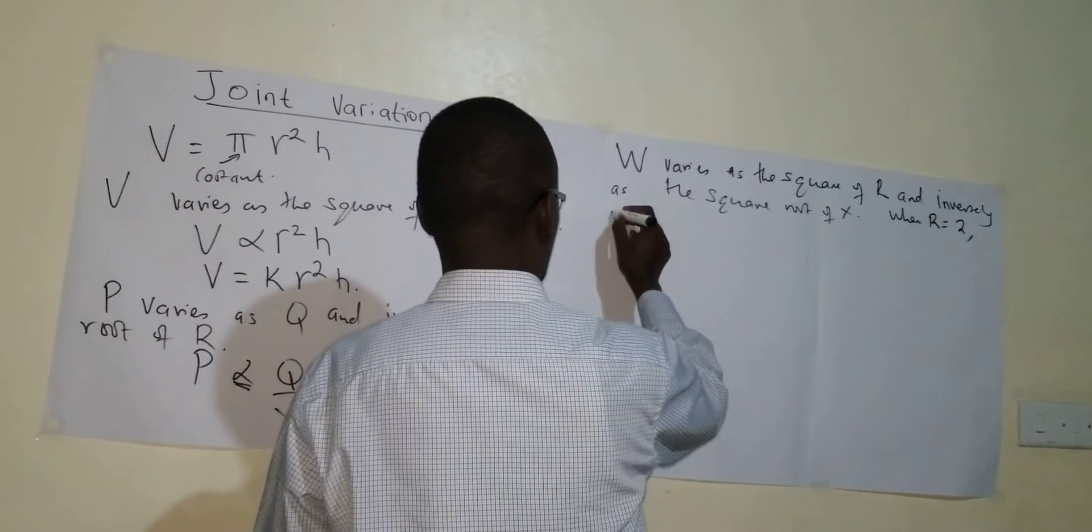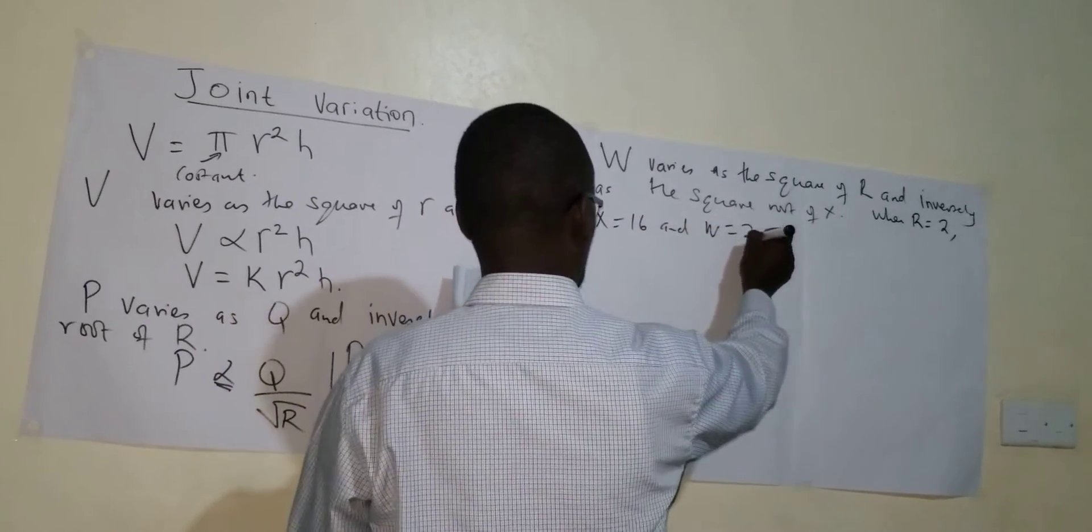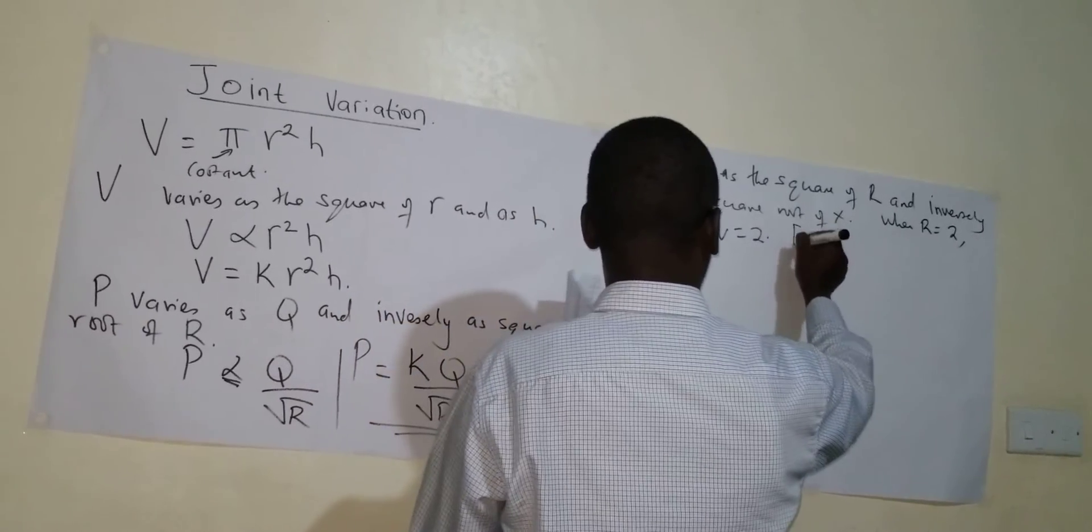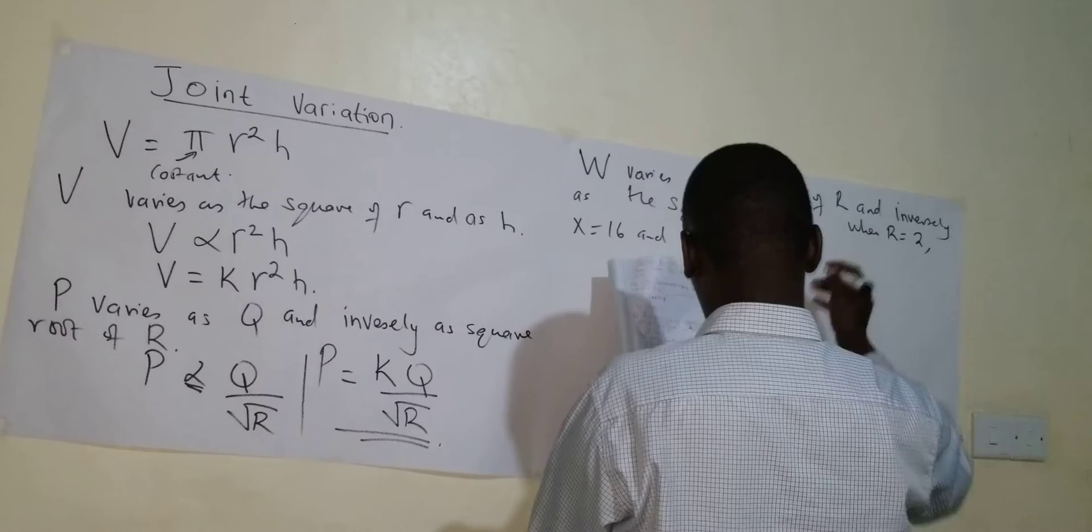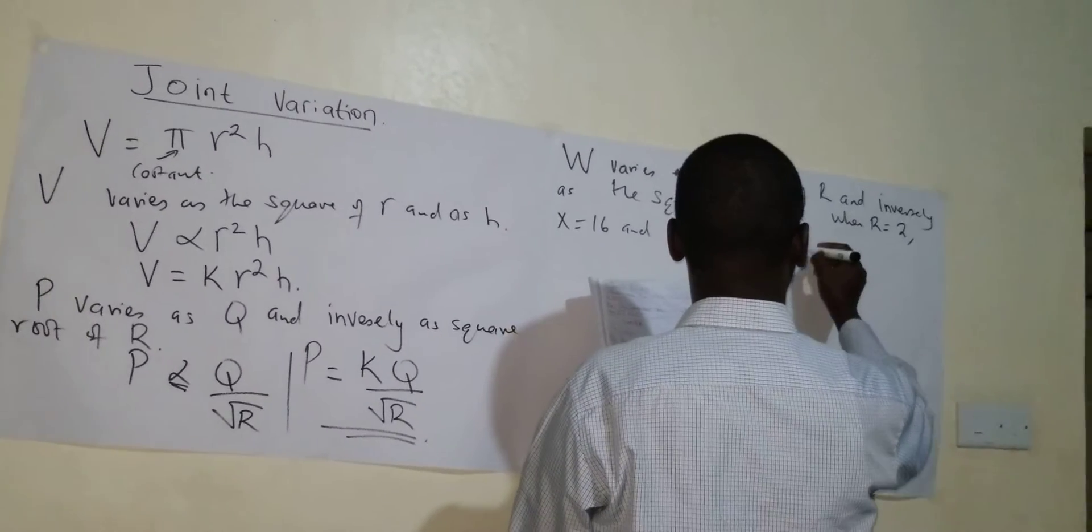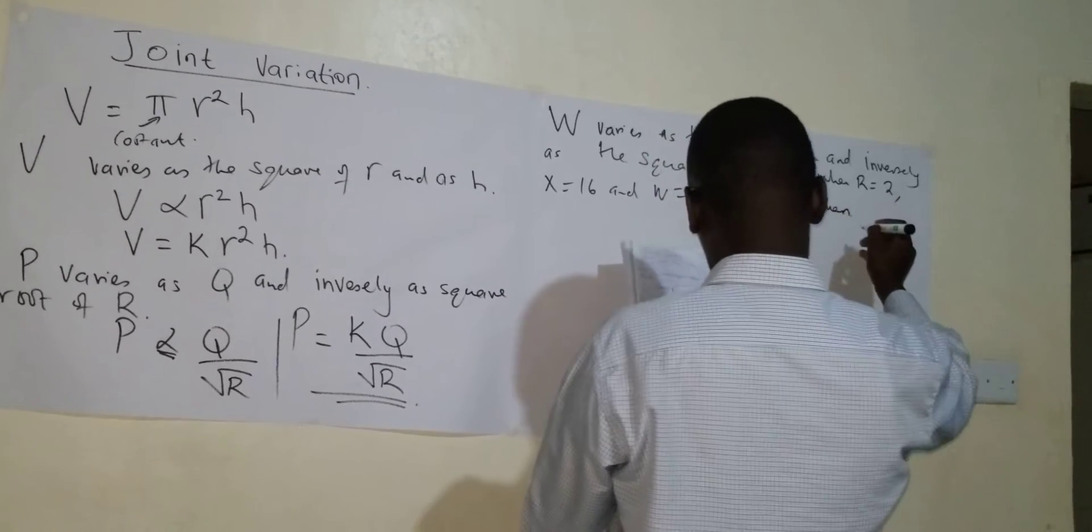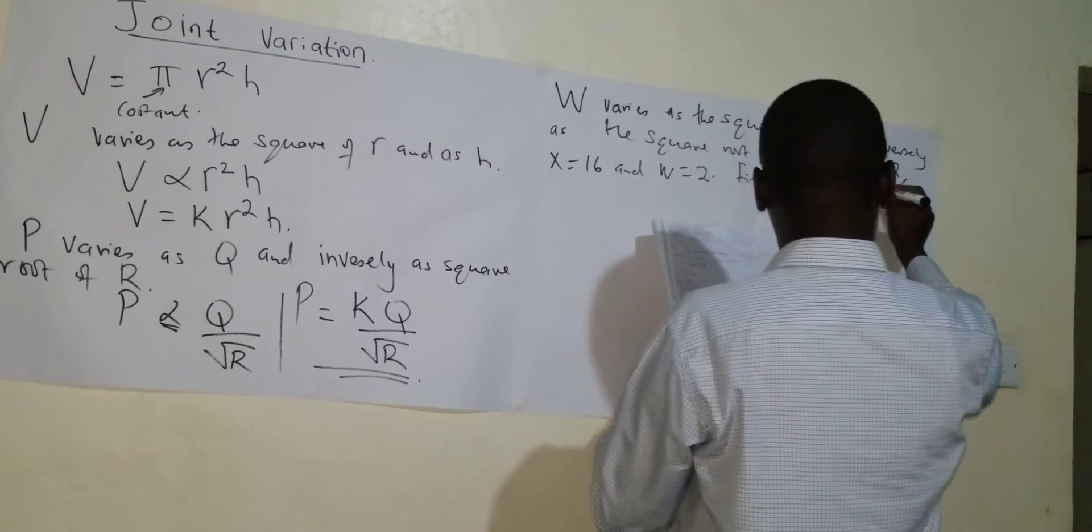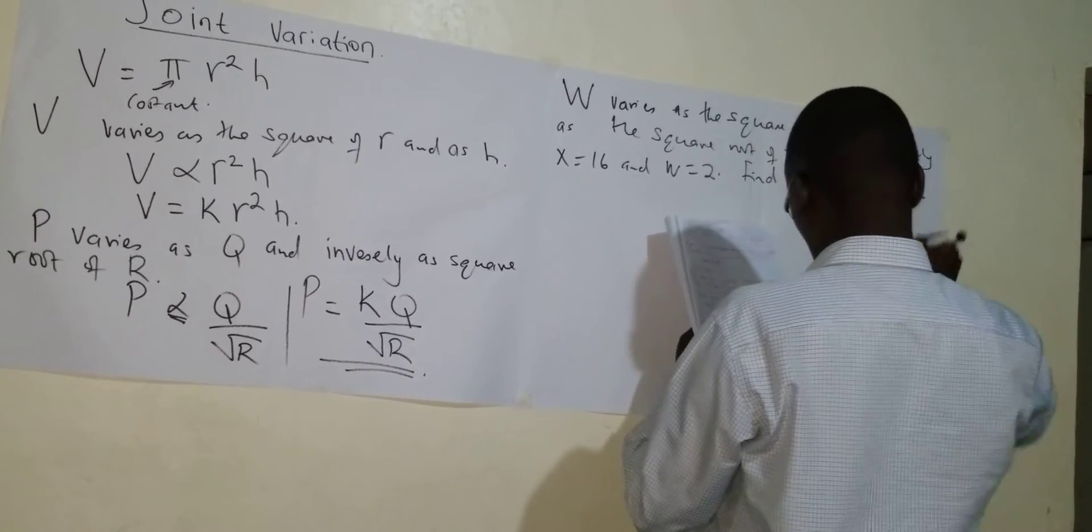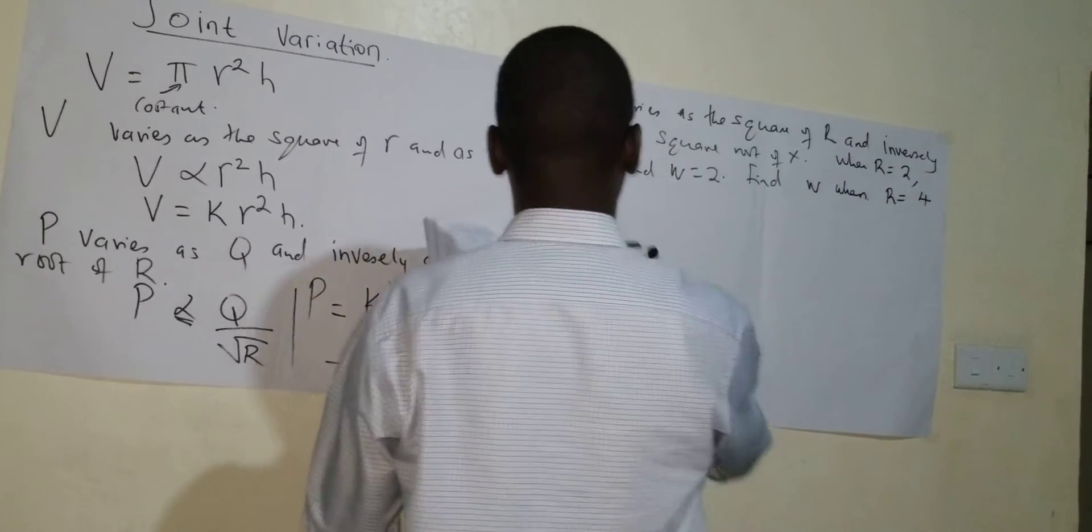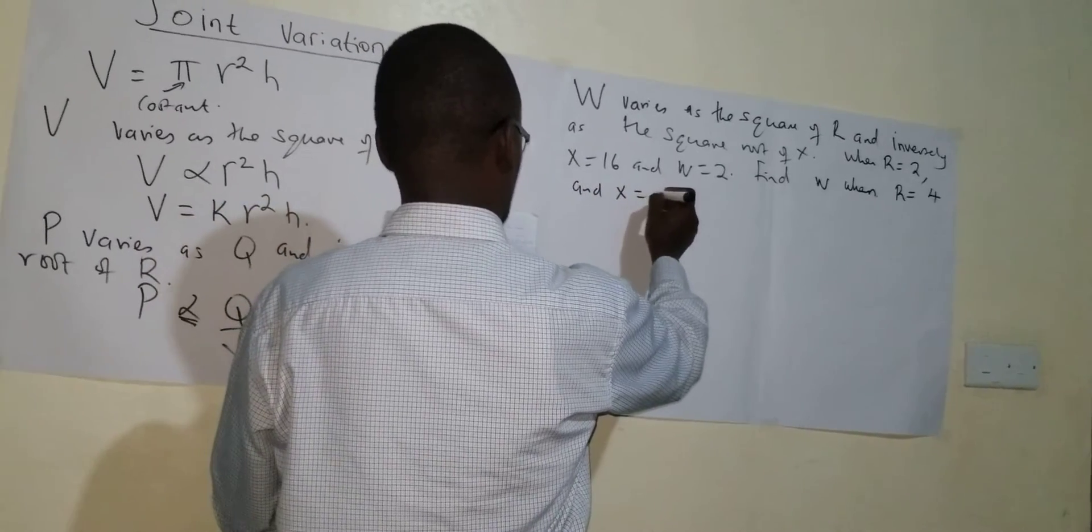You are told that when R is 2, X is 16, and W is 2. So you are asked to find W when R is 4 and X is 9.